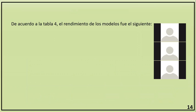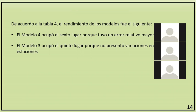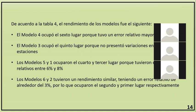De acuerdo a la tabla 4, el rendimiento de los modelos fue el siguiente: el Modelo 4 ocupó el sexto lugar con el peor rendimiento, teniendo errores relativos mayores al 30%. El Modelo 3 ocupó el quinto lugar con errores mayores al 10%. Los Modelos 5 y 1 ocuparon el cuarto y tercer lugar con errores entre el 6 y el 8%. Finalmente, los Modelos 6 y 2 ocuparon el segundo y primer lugar, con un rendimiento similar y errores relativos alrededor del 3%.